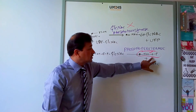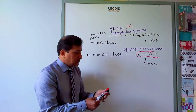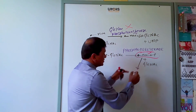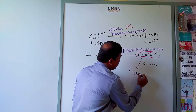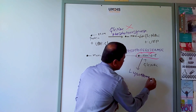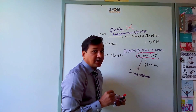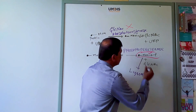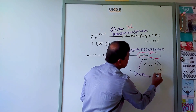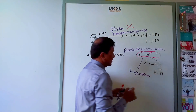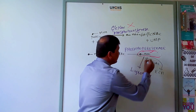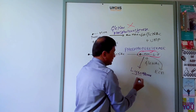In the absence of mannose 6-phosphate, this protein — instead of going to the lysosome — will go by default to the extracellular matrix. If it is phosphorylated with mannose 6-phosphate, it goes to the lysosome. If it is not phosphorylated, it goes by default to the extracellular matrix.